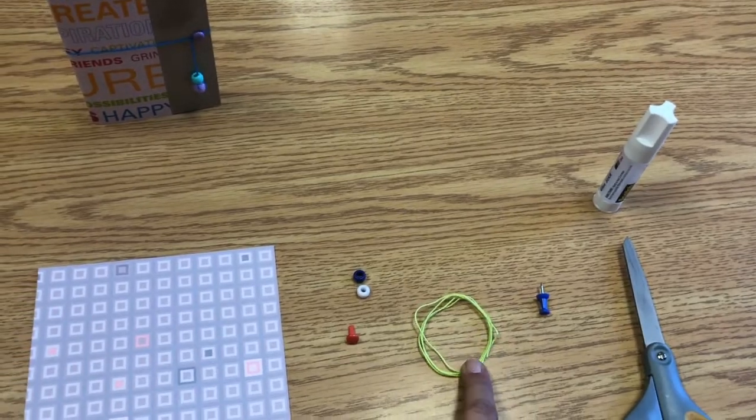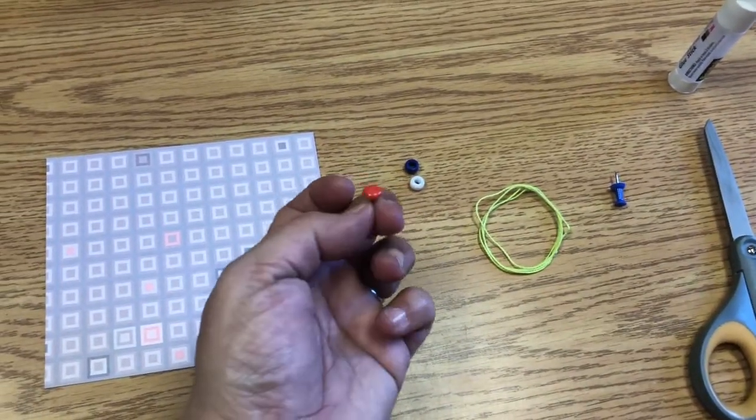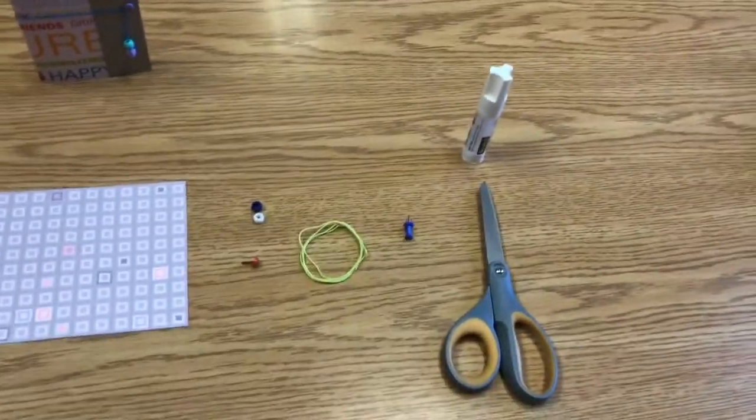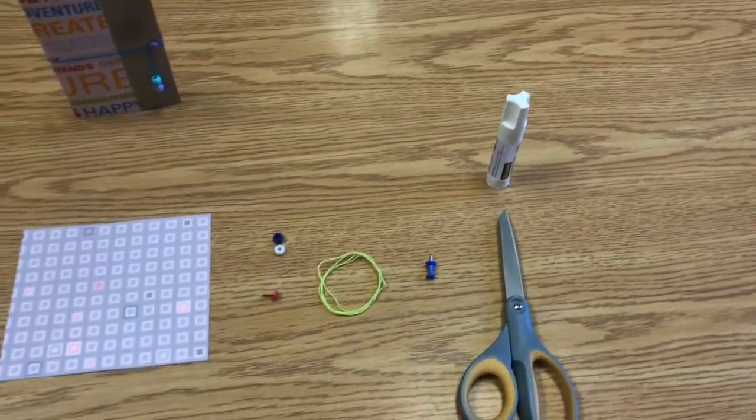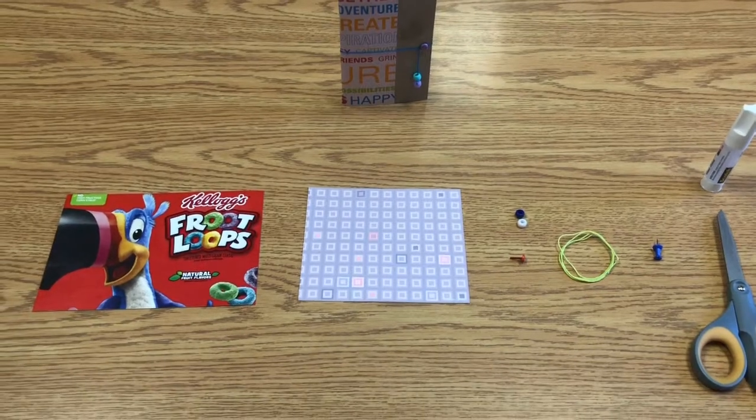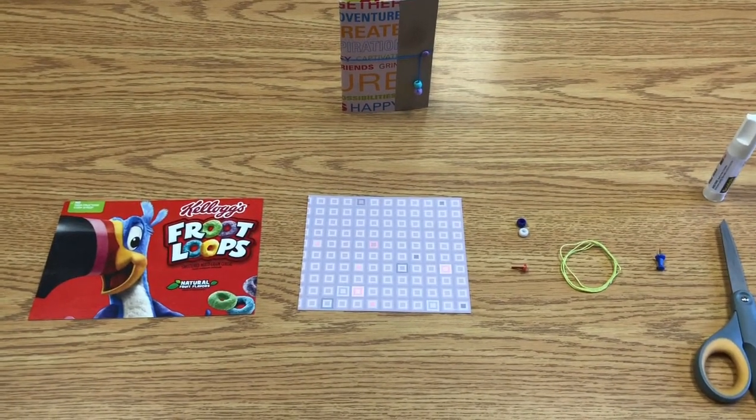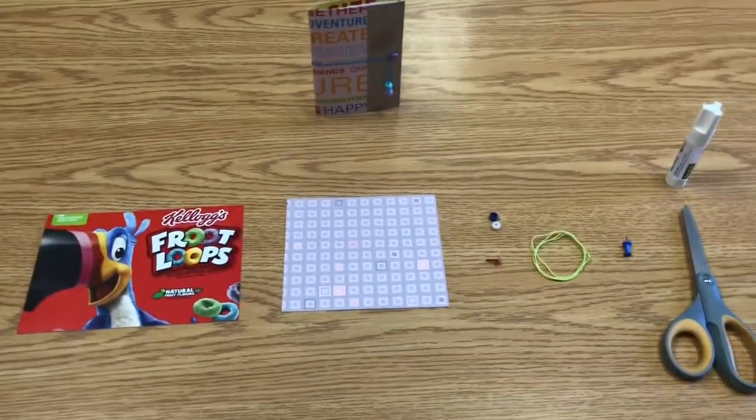Some floss or thread, a paper fastener or brad is what they're called, a couple beads, and some tools you might need: a pin to make a hole, some scissors, and some glue. You will also need some paper to go inside the notebook. About ten sheets or so of paper that are cut a little bit smaller than your cardboard for the outside.